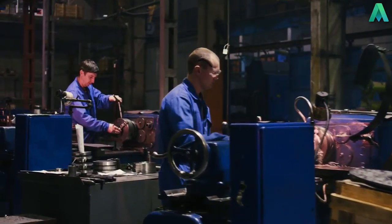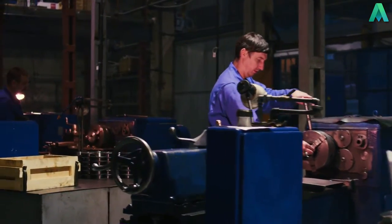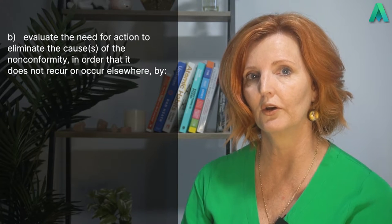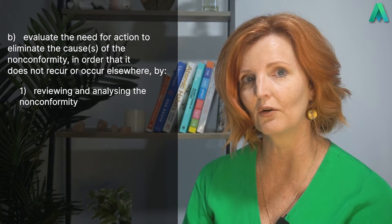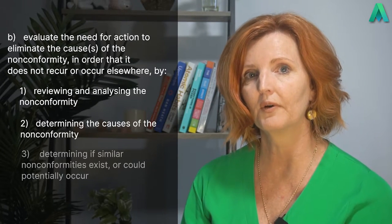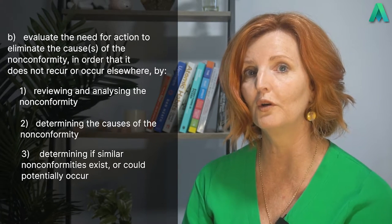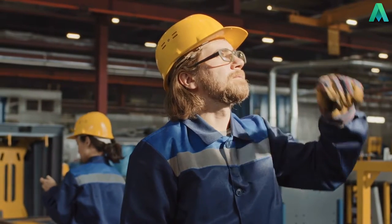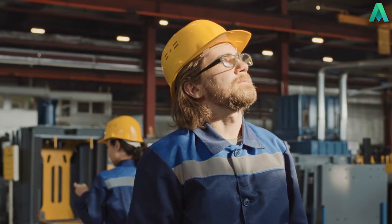The next part of the clause is where we look at the long-term fix or corrective action. The organisation shall: b) evaluate the need for action to eliminate the cause or causes of the non-conformity in order that it does not recur or occur elsewhere, by: 1. reviewing and analysing the non-conformity; 2. determining the causes of the non-conformity; 3. determining if similar non-conformities exist or could potentially occur. The overarching goal is to prevent the non-conformity from recurring or occurring elsewhere, and by doing this we also have the opportunity to find out whether similar non-conformities have already occurred or have the potential to occur.